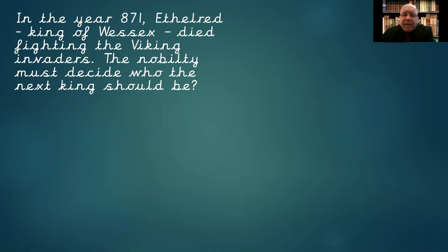So the year is 871 AD. We know that the nobility are the kings and also the other senior and wealthy people within the court — these are the people who make decisions. When the king had died, it was up to them to decide who would take the throne. Sometimes it's very straightforward, but other times a decision has to be made, and you'll understand why they had a difficult decision in a moment.